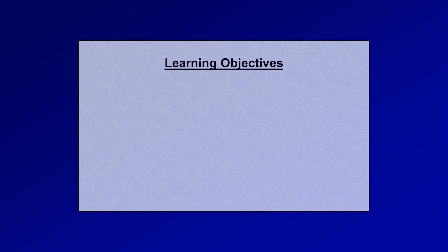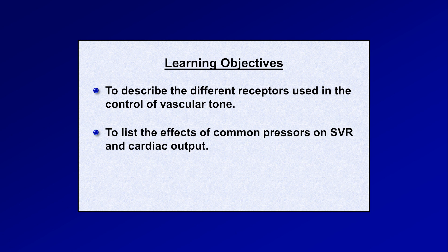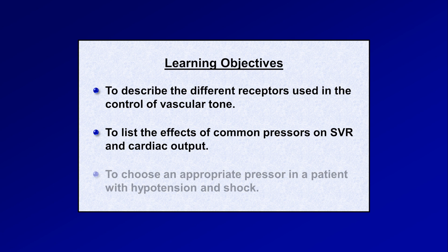This is the fifth video in this series on shock, and the topic is pressors. The learning objectives are to describe the different receptors used in the control of vascular tone, to list the effects of common pressors on systemic vascular resistance and cardiac output, and to choose an appropriate pressor in a patient with hypotension and shock.